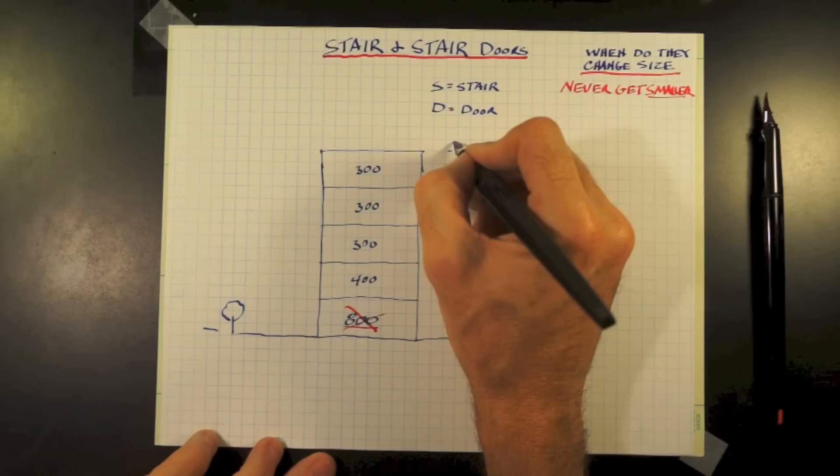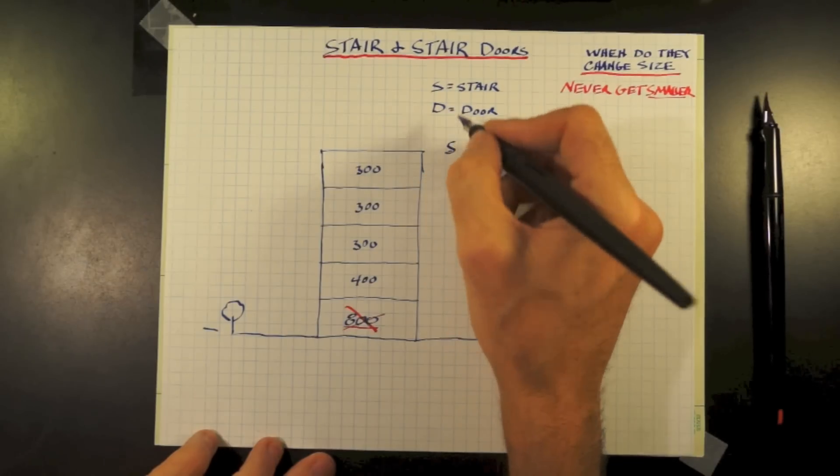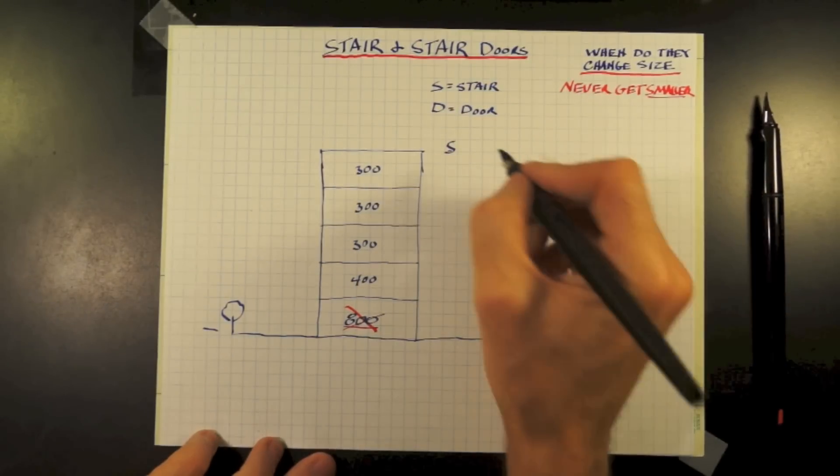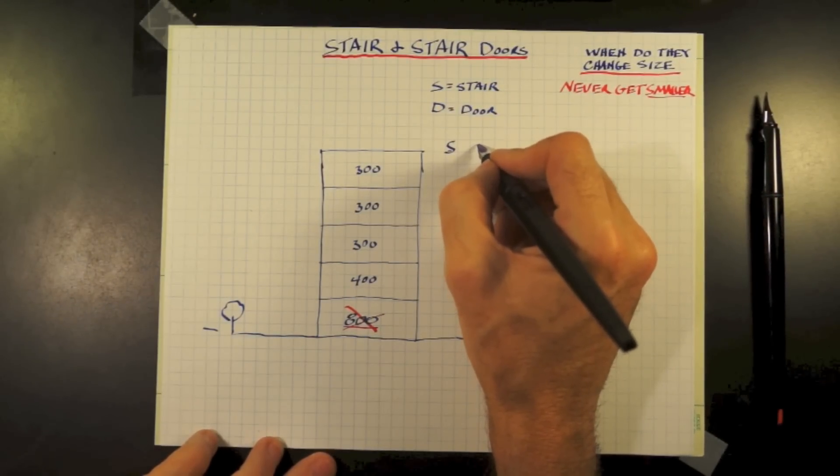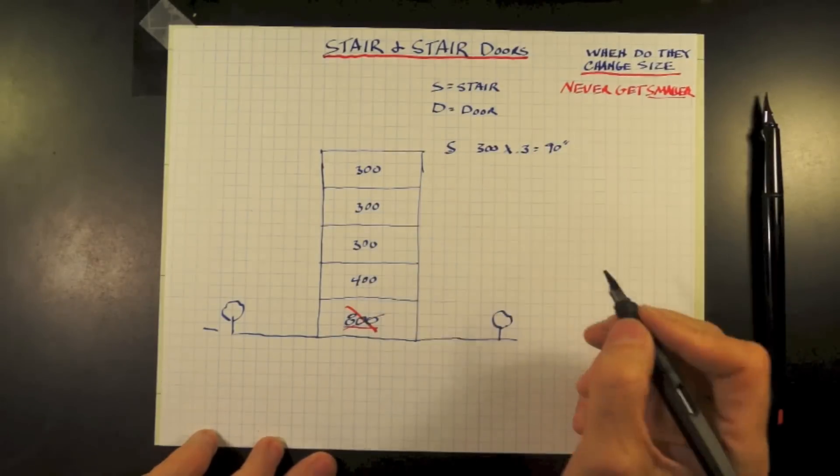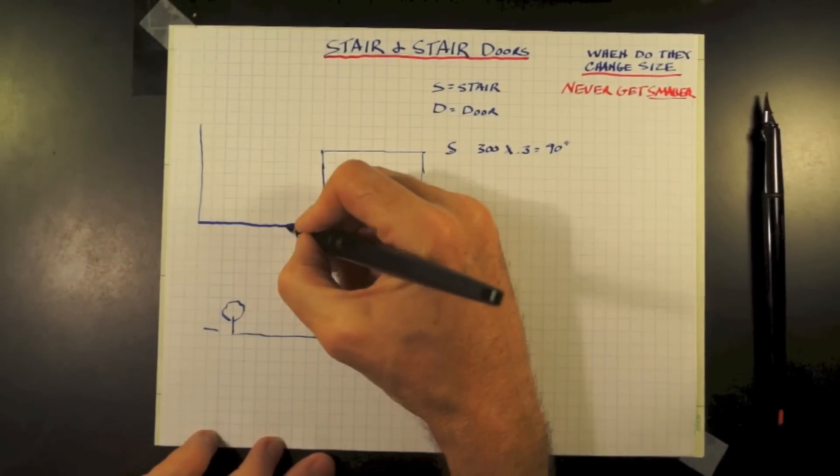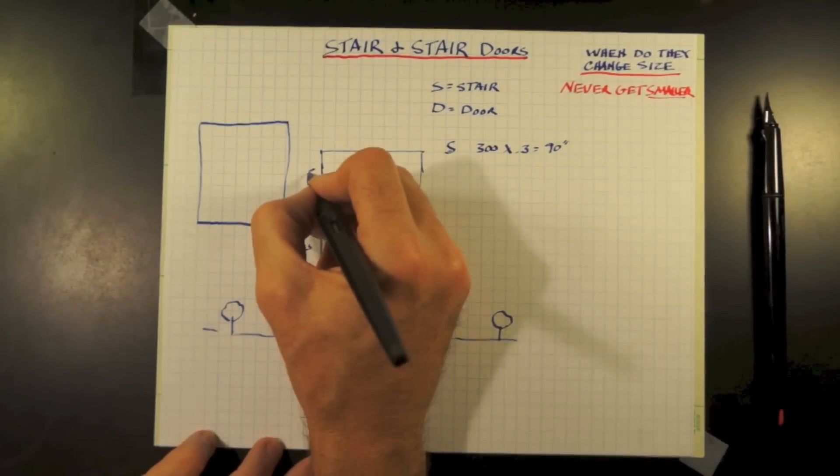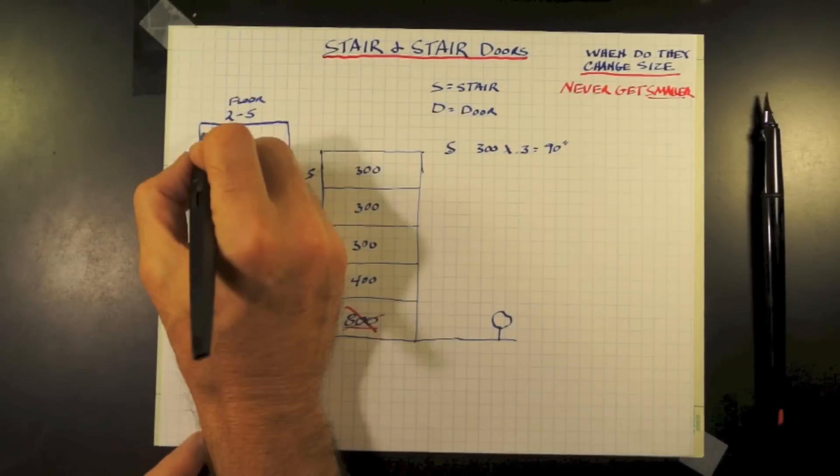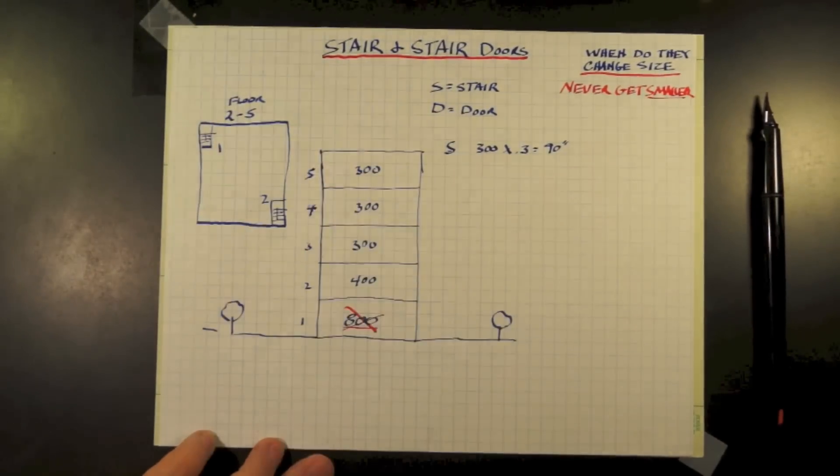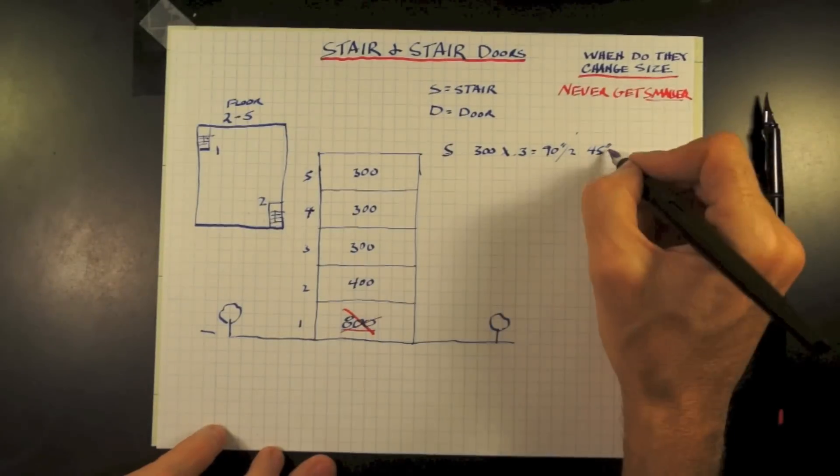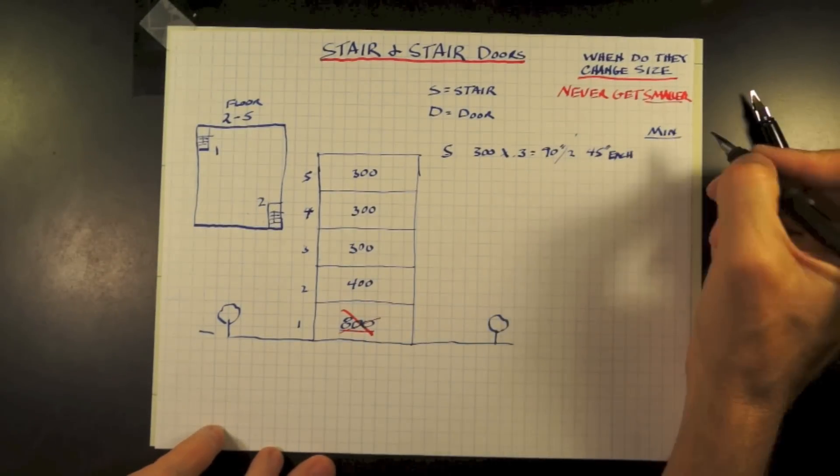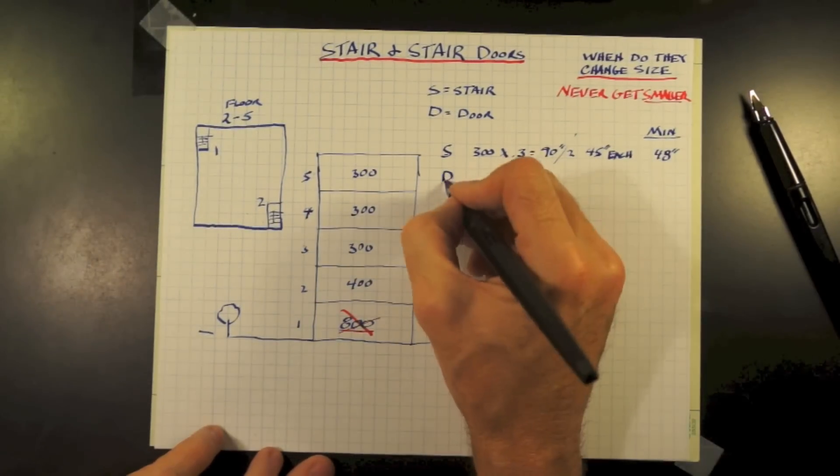So let's start at the top and work down. Our occupant load of 300 times 0.3 equals 90 inches required. Understanding our floor layout with two stairs located in opposite corners, divide that by two. That means each stair must be a minimum of 45 inches each. With a requirement of 48 inches minimum, we easily meet the requirement at 48.